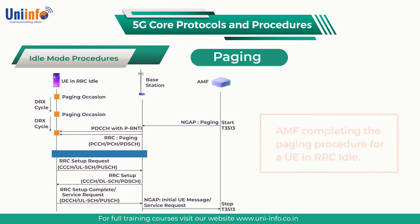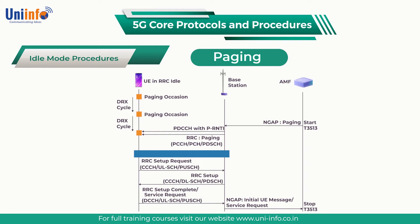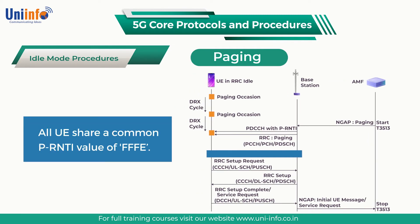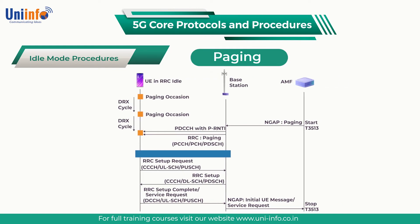In RRC idle, the UE uses discontinuous reception (DRX) to conserve UE battery life. The UE receiver enters a sleep mode between periodic paging occasions. At each paging occasion, the UE scans for a PDCCH transmission which has its CRC scrambled by the P-RNTI. All UEs share a common P-RNTI value of FFFE. Downlink control information DCI format 1_0 is always used when allocating PDCCH resources for a paging message.